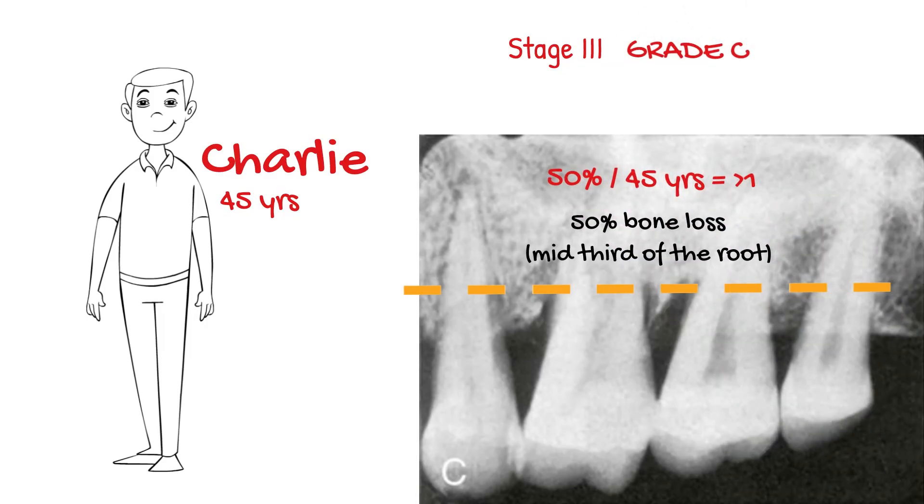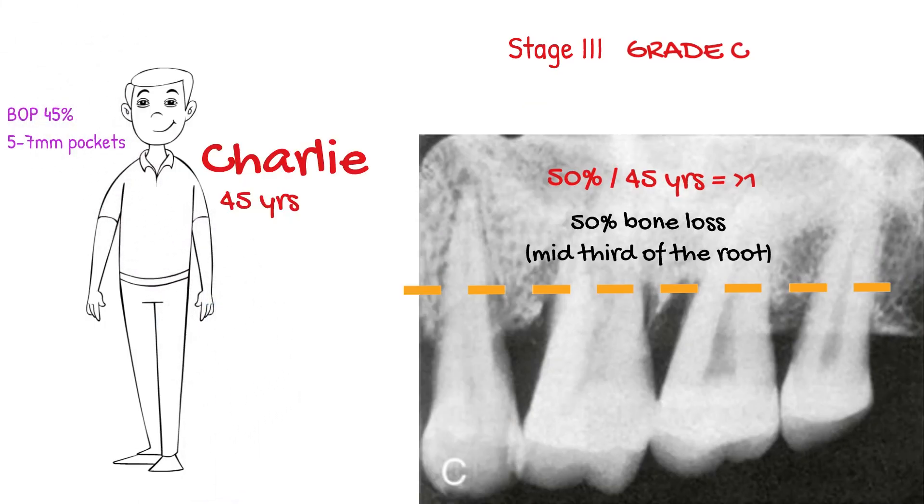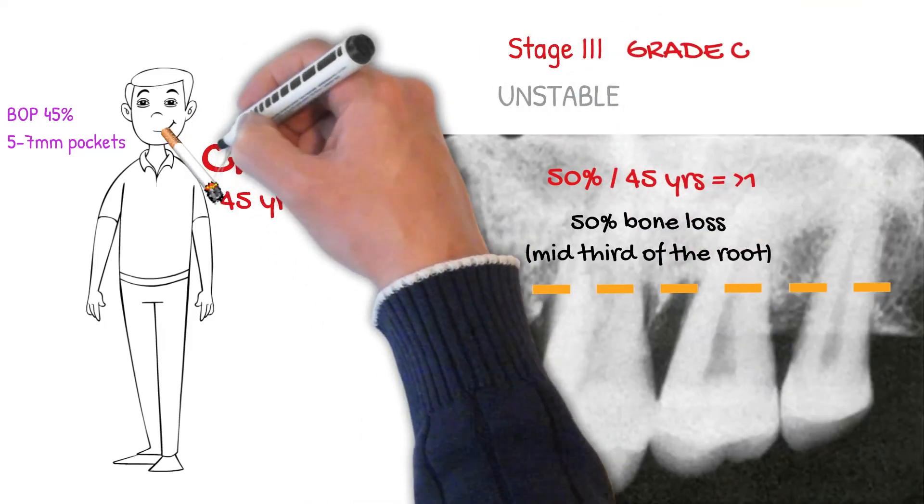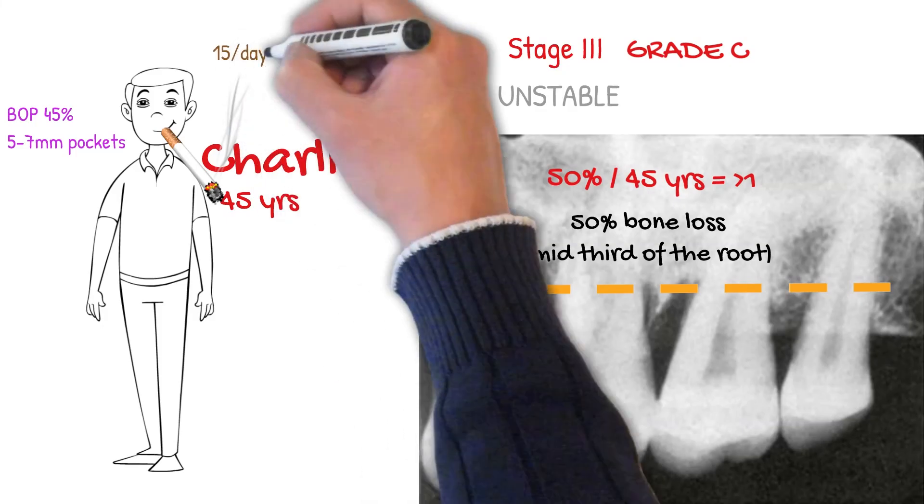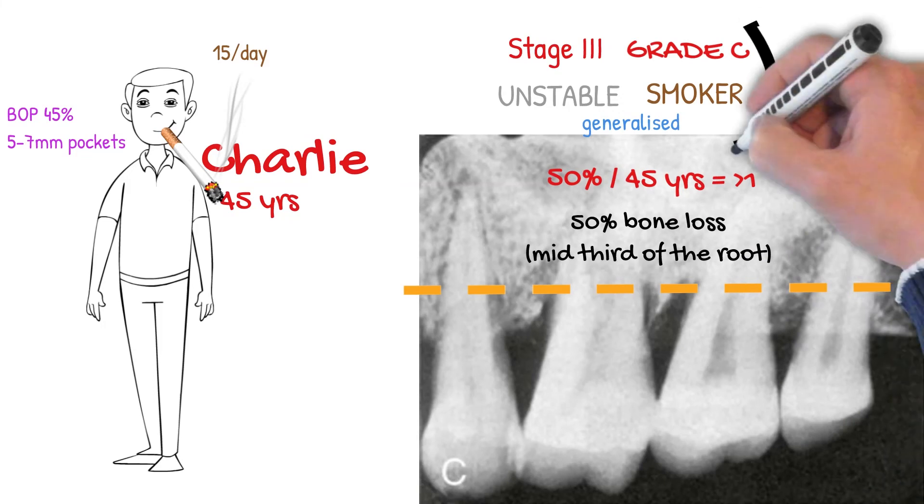Charlie has a high bleeding score and pockets ranging from 5 to 7 millimeters, which means his disease is unstable. He also likes to smoke, so we can record this as a risk factor. Finally, most of his teeth are affected, so his disease is generalized.